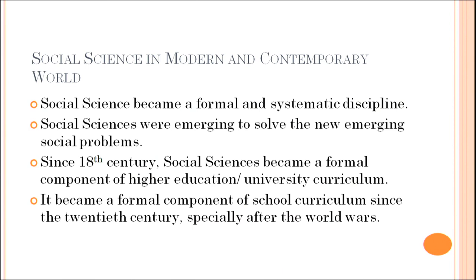Social sciences in the modern and contemporary world — in the contemporary world, we see social science finally becoming a formal and systematic discipline. Social sciences were emerging to solve new emerging social problems. As we proceed towards modernization and the contemporary age, there are numerous problems we face every day. Since the 18th century, social science became a formal component of higher education in the university curriculum.